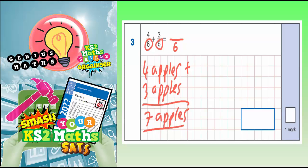So 4 sixths add 3 sixths is 7 sixths, in the same way that 4 apples add 3 apples is 7 apples. So your final answer is 7 sixths.